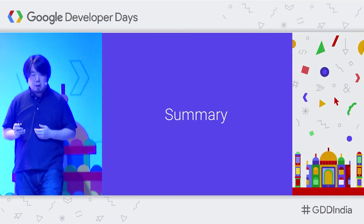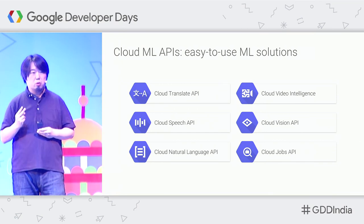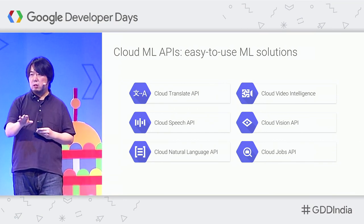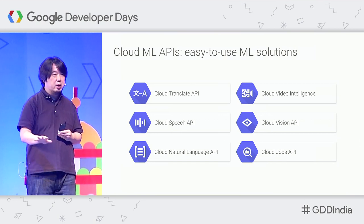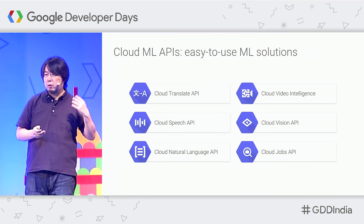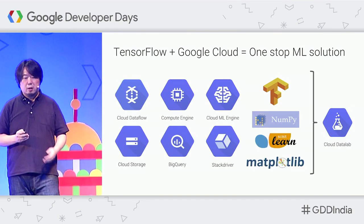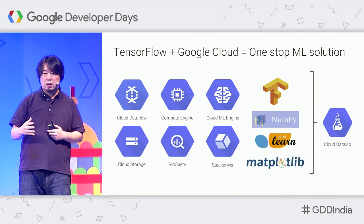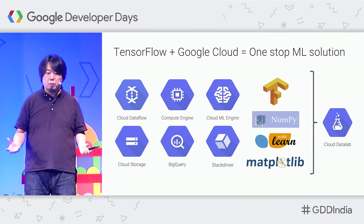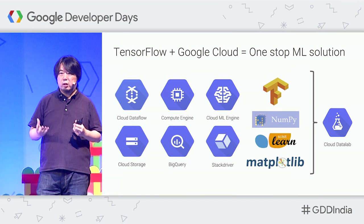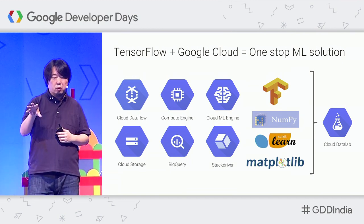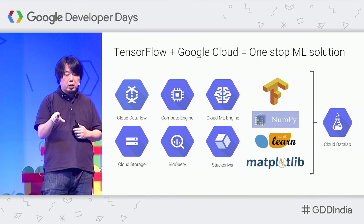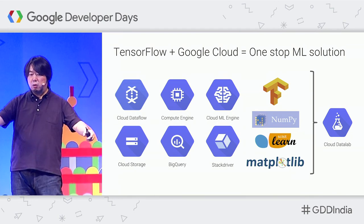As a summary, we provide two different solutions. The first is the ML APIs — you can start using them right now because they don't require any machine learning expertise. Just upload your images or audio. The second solution is TensorFlow with various cloud products that provide a one-stop ML solution to build customized machine learning solutions. TensorFlow works with other cloud products such as Cloud Dataflow, ML Engine, BigQuery, and Cloud Storage to build complete solutions, and you can continue using industry-standard tools such as NumPy, scikit-learn, or MATLAB.